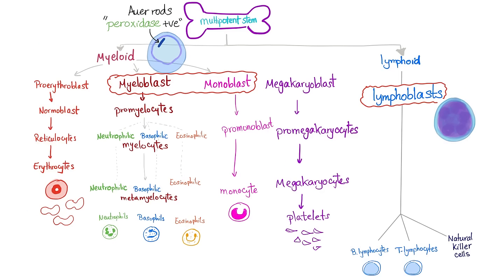Remember our discussion on hematopoiesis — we start with a multipotent stem cell. We have myeloid lineage and lymphoid lineage. Acute myelogenous leukemia is a malignancy of the precursors that produce myeloid cells. Acute lymphoblastic leukemia, on the other hand, involves lymphoblasts — the parents of the lymphocytes. So AML arises from the myeloid lineage and ALL arises from the lymphoid lineage.